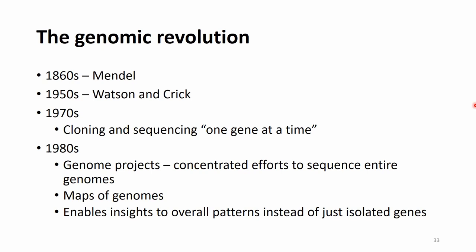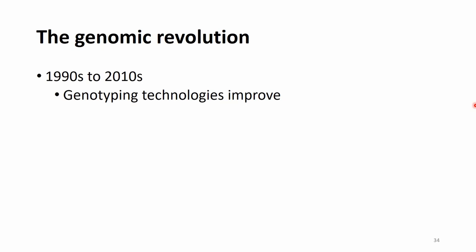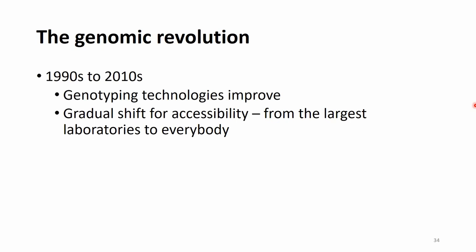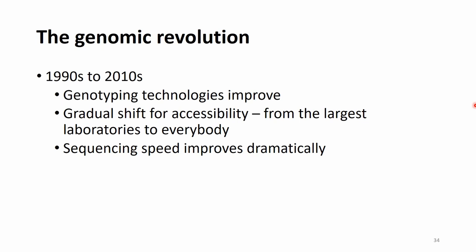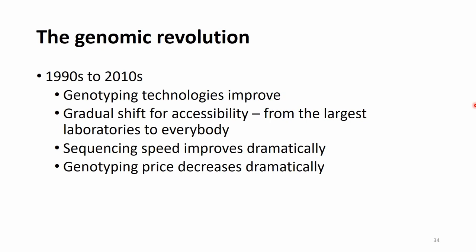There were many other people and discoveries that enabled this timeline and the genomic revolution itself. Coming to more recent times — in the 90s and past 2000 — genotyping techniques improved. There has been a gradual shift in accessibility: at the beginning only the largest laboratories, corporations, and consortia could obtain genotypes, but nowadays it is basically affordable for everybody. We also have greatly increased sequencing speeds and dramatic decreases in pricing.